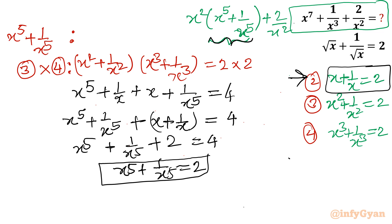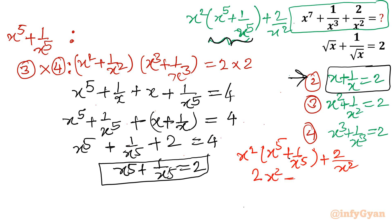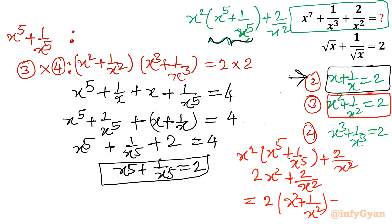Now let's substitute the values. The original expression, after factoring out x squared, becomes x squared times the quantity x power 5 plus 1 over x power 5, plus 2 over x squared. Substituting x power 5 plus 1 over x power 5 equals 2 gives 2x squared plus 2 over x squared. Taking 2 common gives 2 times the quantity x squared plus 1 over x squared, and since x squared plus 1 over x squared equals 2, the final answer is 2 times 2 equals 4.